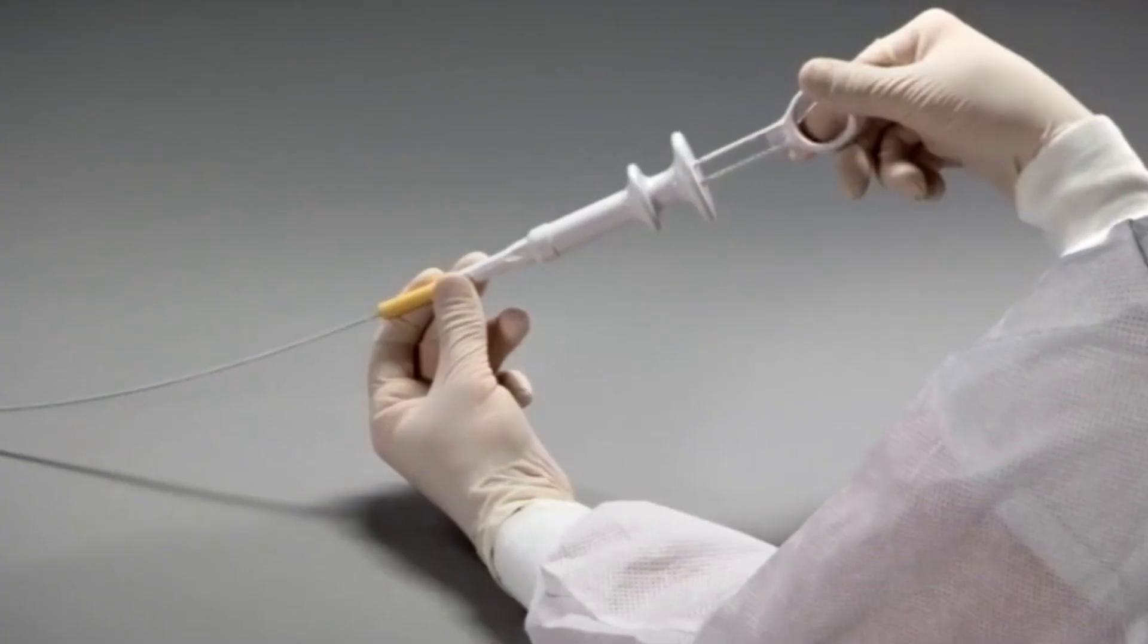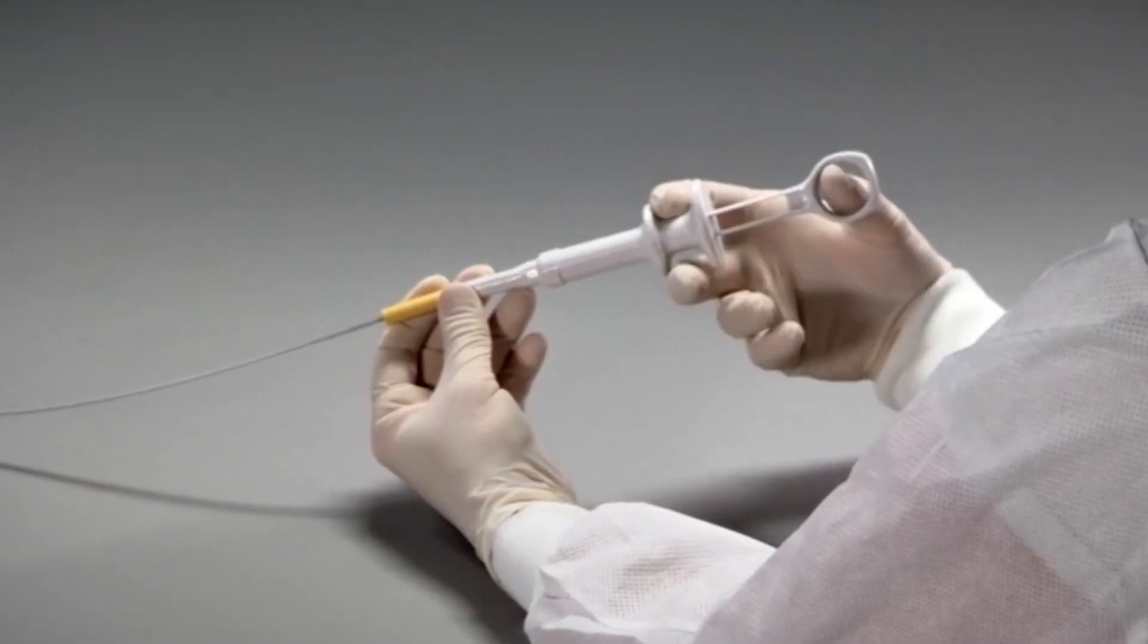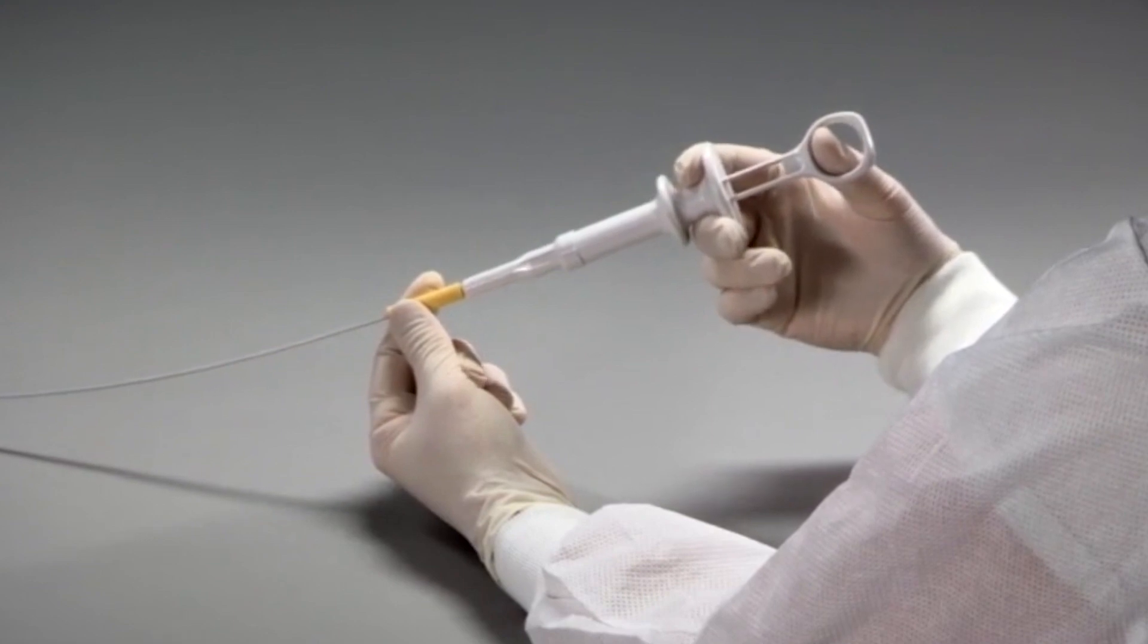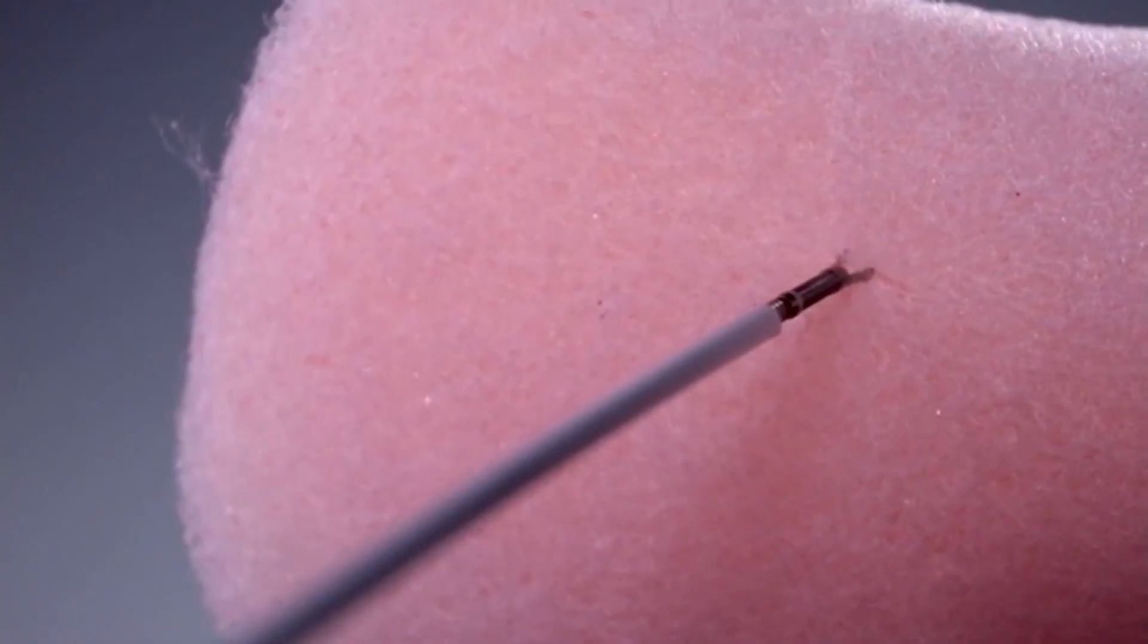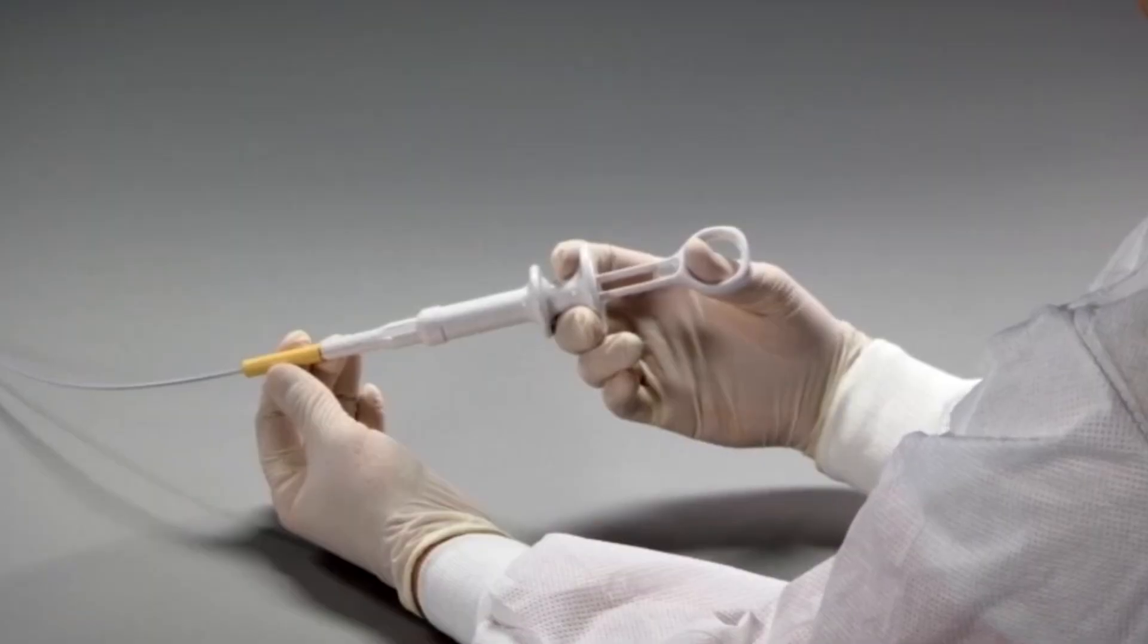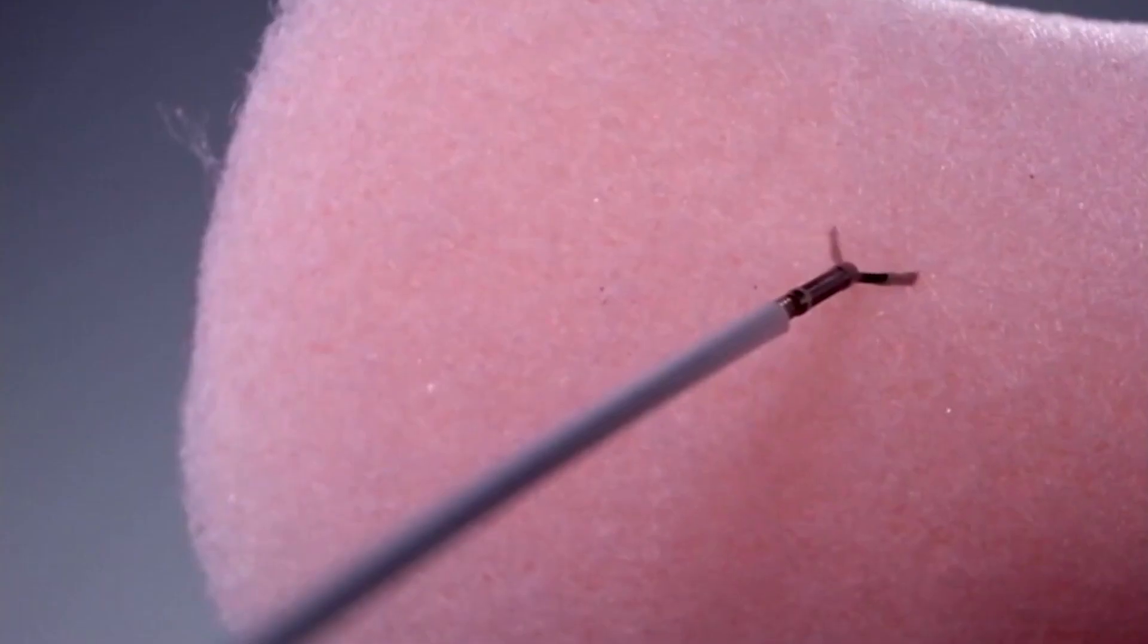To close the clip pull the slider slowly toward you until resistance is felt and confirm visually the clip is closed. If the clip is not in the desired position it can be opened by pushing the slider slowly away from you.